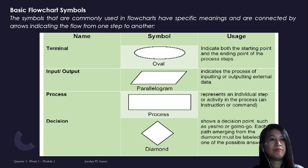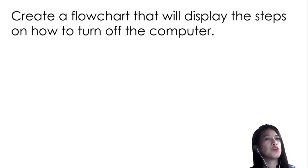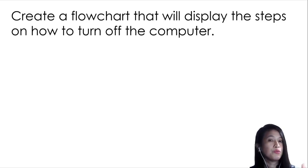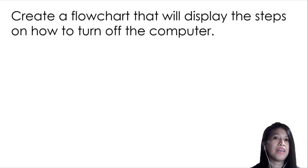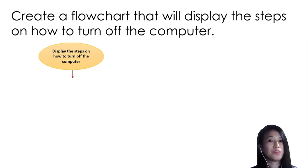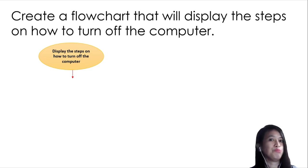Here is another example. The problem is: create a flowchart that will display the steps on how to turn off the computer. Going back to the procedure — step one, identify the task: what is asked is to display the steps on how to turn off the computer; what is given is turning off the computer. Then you document using the different symbols, starting with the terminator symbol to begin the flowchart.